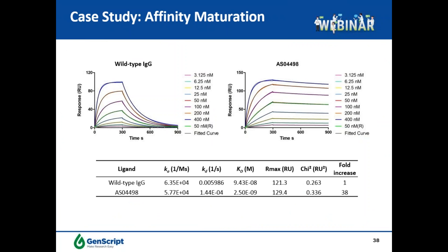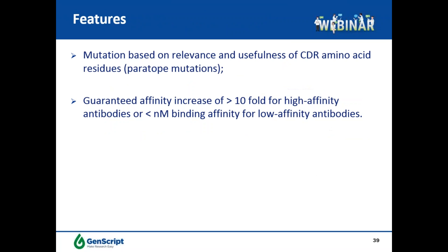In a case study for affinity maturation, the process improved the affinity from 94 nanomolar in the wild-type to 2.5 nanomolar in the affinity-matured antibody, a 38-fold improvement. To summarize, our affinity maturation platform designs mutations based on the relevance and usefulness of CDR amino acid residues after paratope mapping, and guarantees to increase affinity by tenfold for high-affinity antibodies, or to increase to nanomolar binding affinity for low-affinity antibodies.